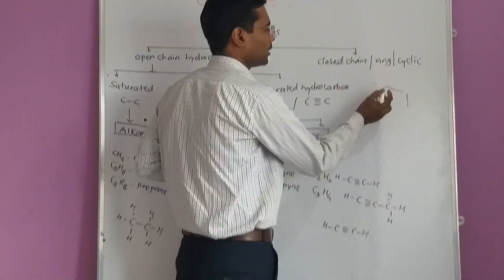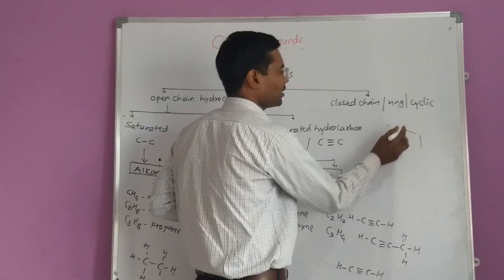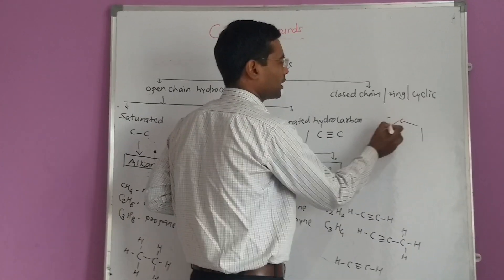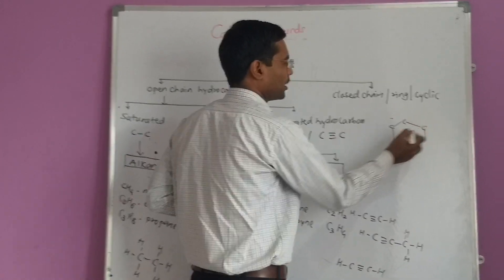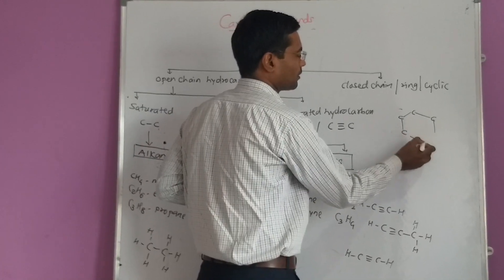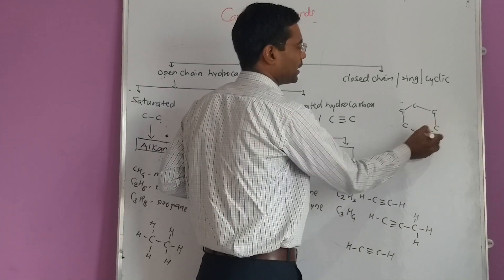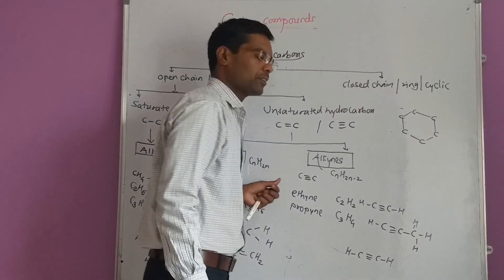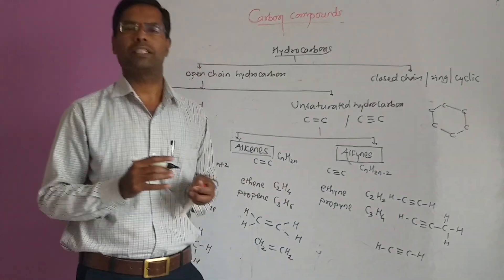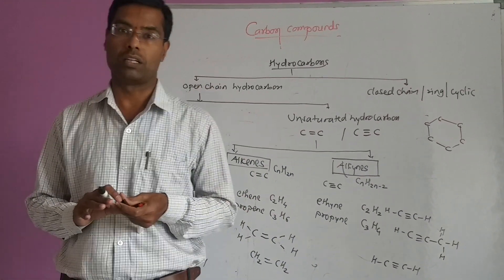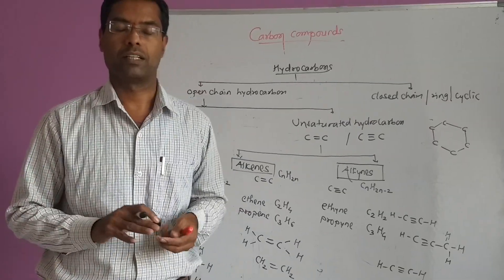Here is the example of benzene, which contains 6 carbons. Benzene has a hexagonal structure with alternating bonds.